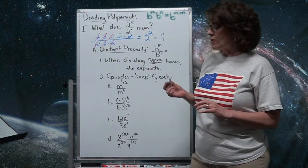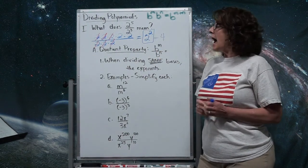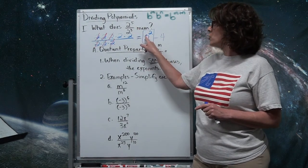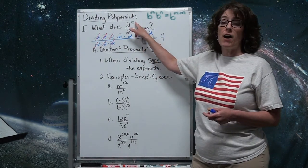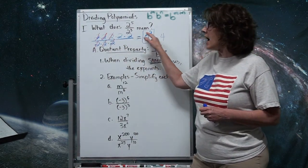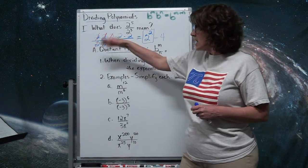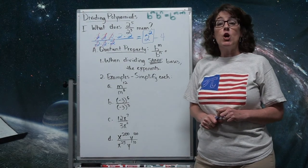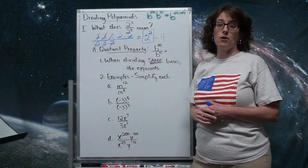What I'm really interested in is how to go in one step from 2 to the 5th over 2 to the 3rd directly to the answer. Because if this were 55 and 33, I don't want to write out 55 twos and start canceling — that would take entirely too much time. So I need a shortcut.